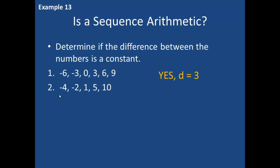In the next example, with the numbers negative 4, negative 2, 1, 5, and 10: from negative 4 to negative 2 I am adding 2, from negative 2 to 1 I am adding 3, then adding 4, then adding 5. This is not a constant difference, so no, this sequence is not arithmetic.